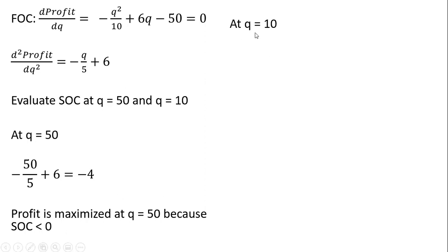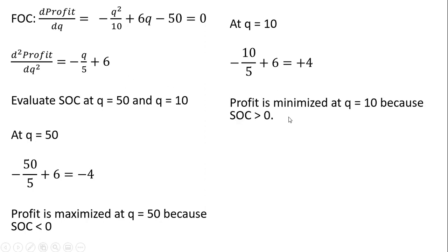At Q equals 10, we evaluate the second order condition and get positive 4, so profit is minimized at Q equals 10 because the second order condition is greater than 0.